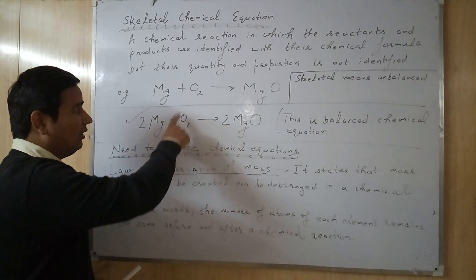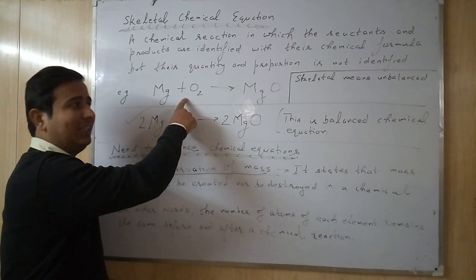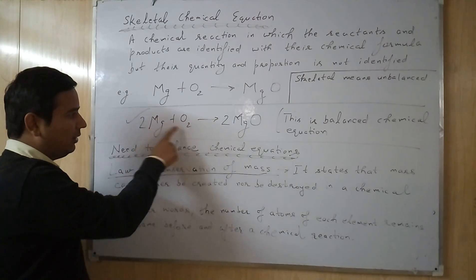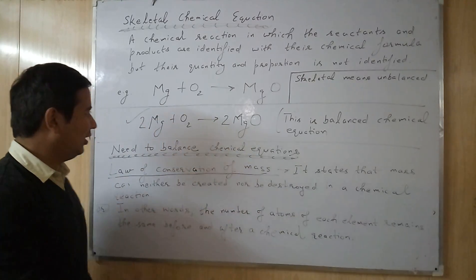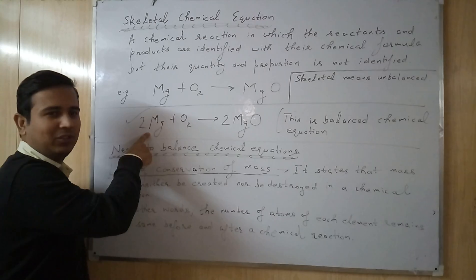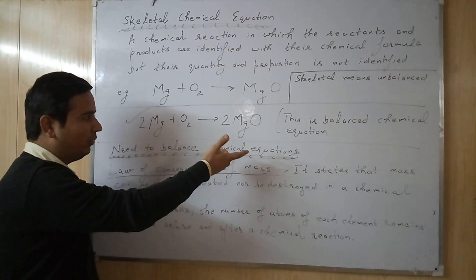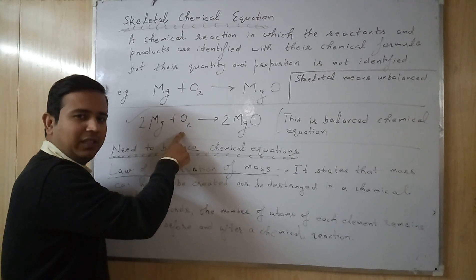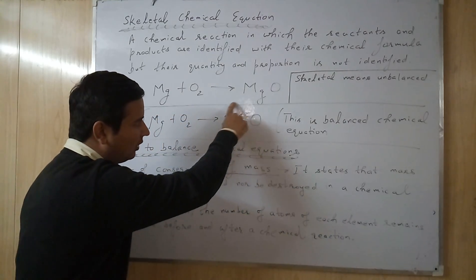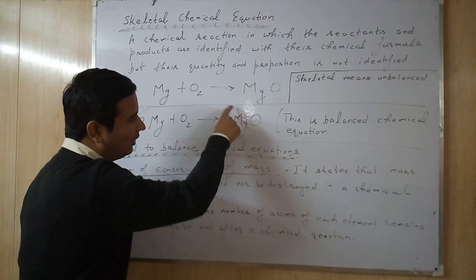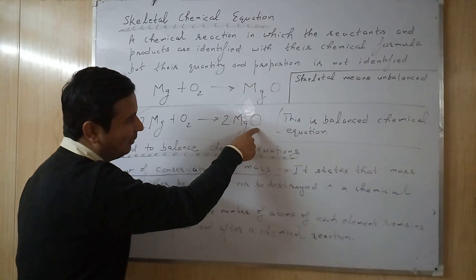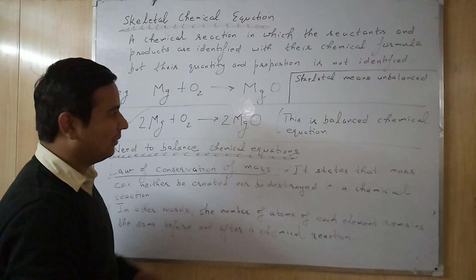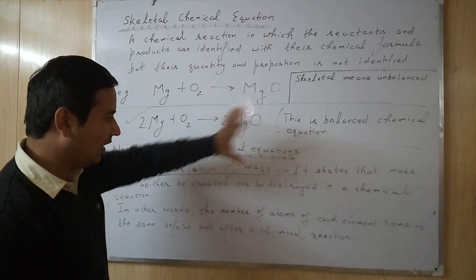So what is balanced chemical equation? If I have to write the balanced form of this chemical equation, the balanced chemical equation will be this: 2Mg plus O2 gives you 2MgO. Now we are very well clear here. 2 atoms of Magnesium on the reactant side, also 2 atoms of Magnesium. 2 atoms of Oxygen on the reactant side, same 2 atoms. Because this 2 will belong to this element and this element also, means 2 Magnesium atoms and 2 Oxygen atoms.